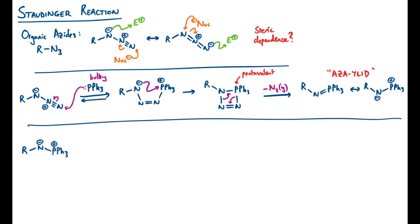So what can the azaylid do? Well in the first instance, you can react it with water. This of course could be in the same flask as the triphenylphosphine was. The N- can attack the proton source like this to give me a NH bond and leave me with an electrophilic phosphorus.